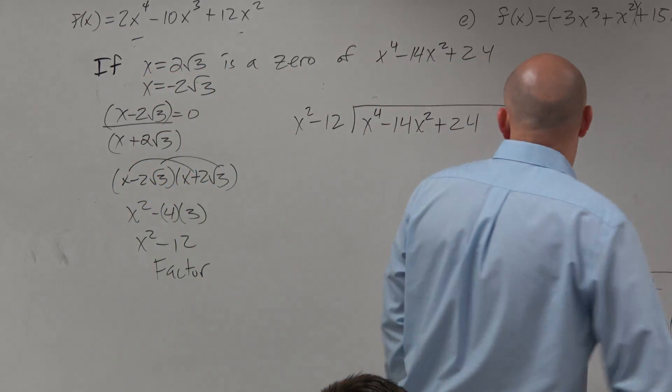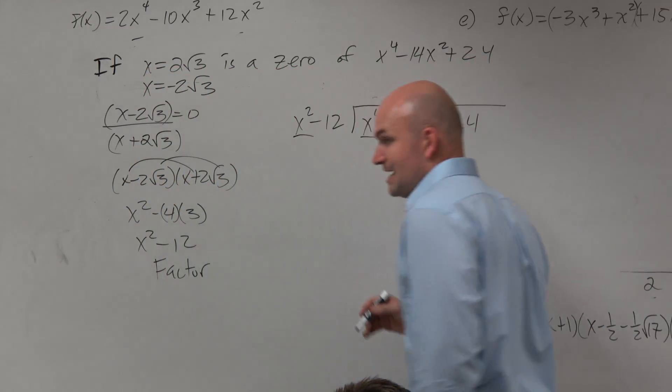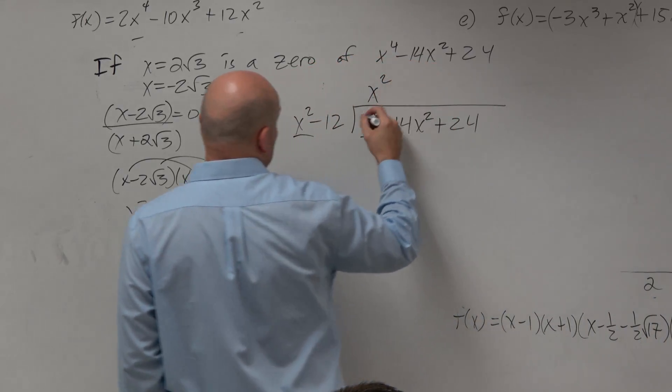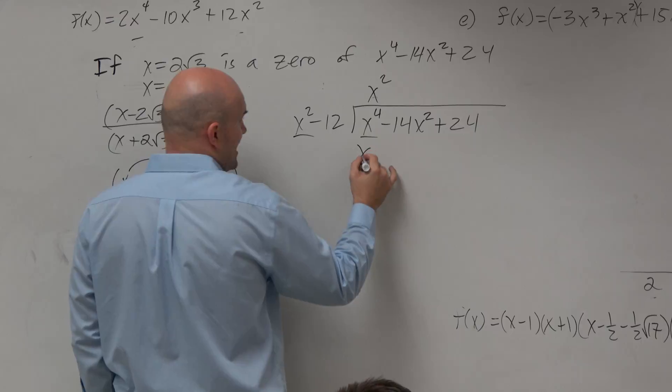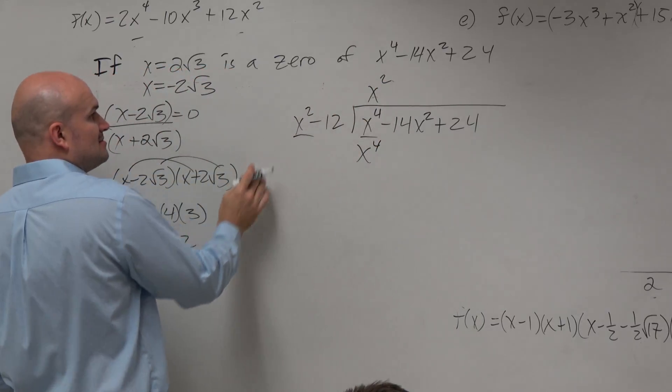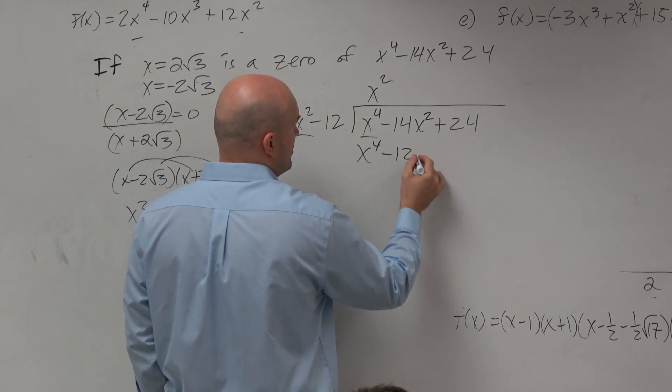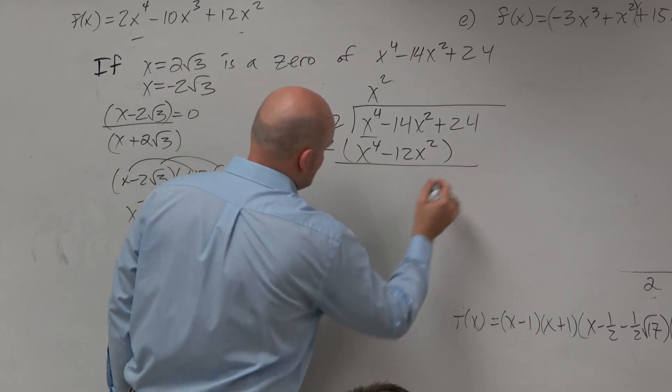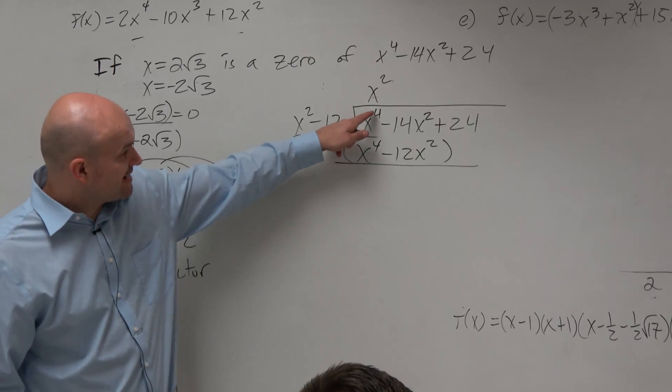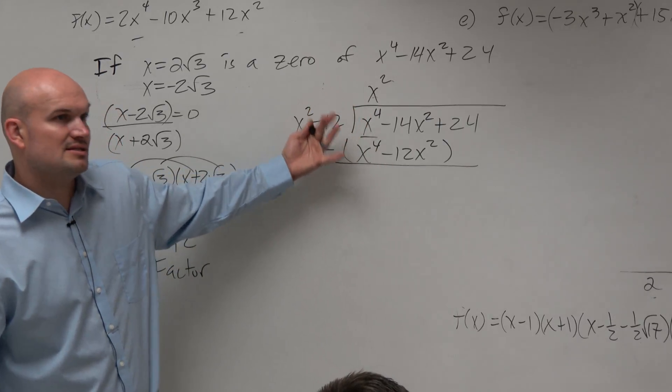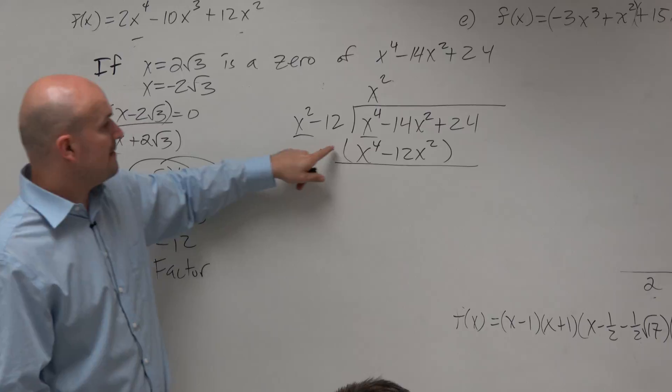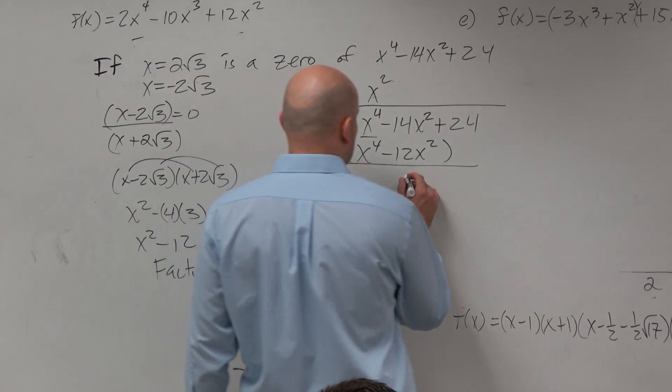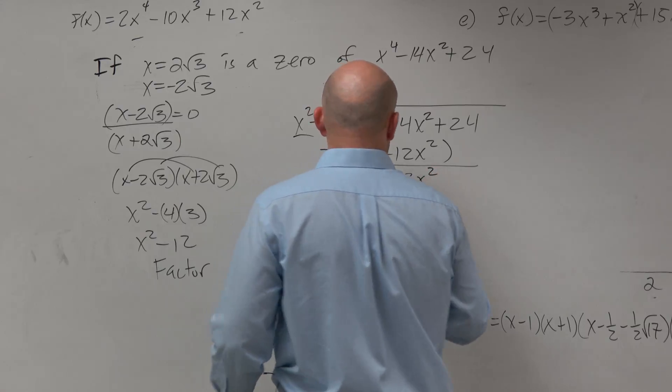Let's follow the same process. How many times does x² divide into x⁴? x² times. You put it up top. x² times x² is x⁴. x² times -12 is going to be -12x². Parentheses, subtract. x⁴ - x⁴ is 0x⁴. -14x² minus a -12x² is now going to be -2x².